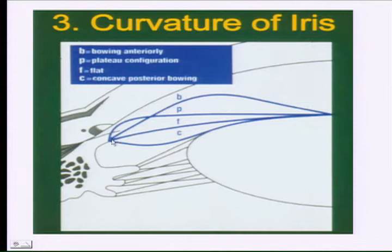A plateau iris in which there's a sudden steep rise and then it flattens out. Definition of a plateau is designated by a P, P for plateau. So plateau iris, sudden steep rise and then flattens out. And an iris which bows posteriorly so it's concave is the C.